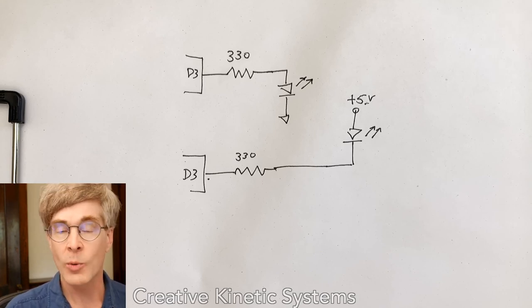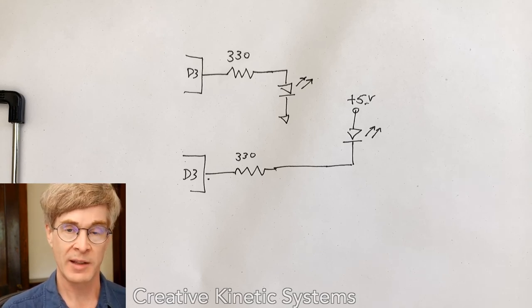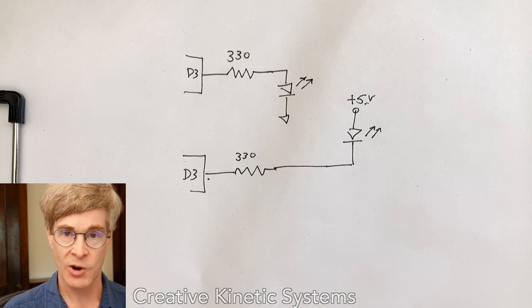And the second heuristic would be, always use a ballast resistor in series with your LED in order to limit the currents that it might see.